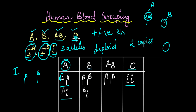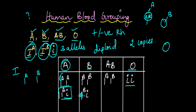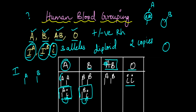Out of these four blood groups, which do you think is an example of codominance? Remember, codominance is expressed usually in heterozygous phenotypes. But if we look at blood groups A and B, these also have heterozygous genotypes. However, in those cases, the IA allele is completely dominant over small i, and IB is completely dominant over small i.